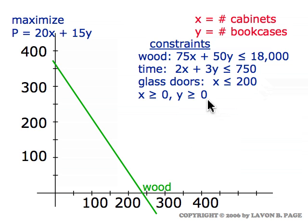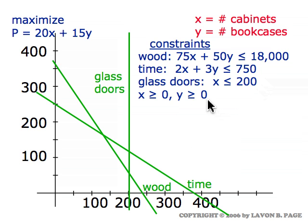So we graph all the constraints, the wood constraint, the time constraint, the glass door constraint, which is a vertical line because it only involves the variable X, and our non-negative constraints. And we wind up with the yellow region shown in the first quadrant.